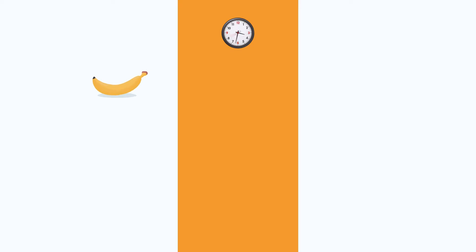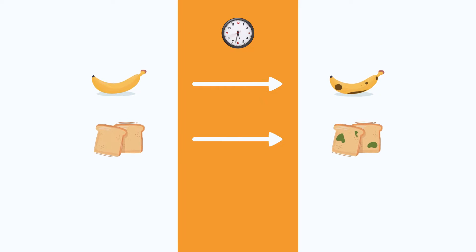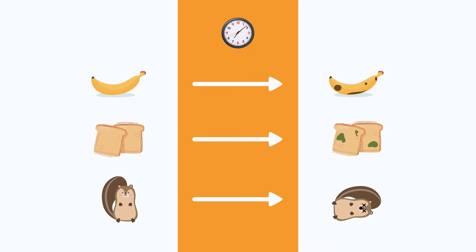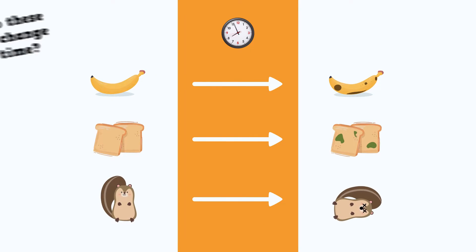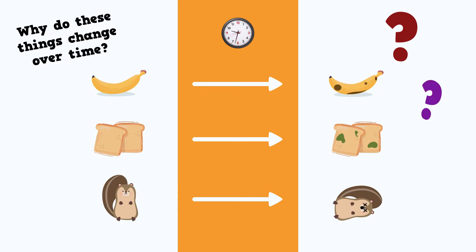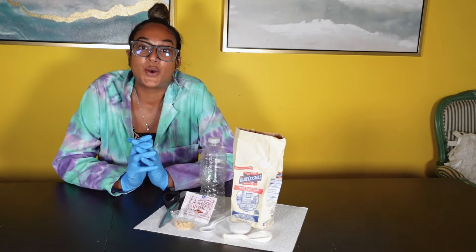Have you ever seen a banana that you got from the grocery store rot over time? What about some bread — has it ever gotten moldy? And how about when you're outside and you see a dead squirrel and it looks different from when it was alive? Why do these things change over time? What in the environment is causing their tissue to change, their skin to change, their bones to change?